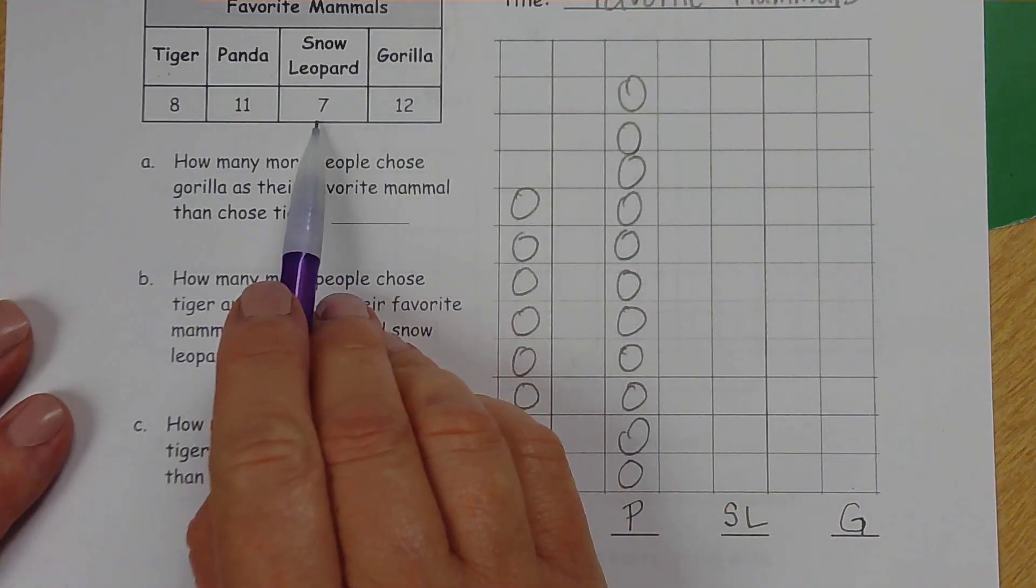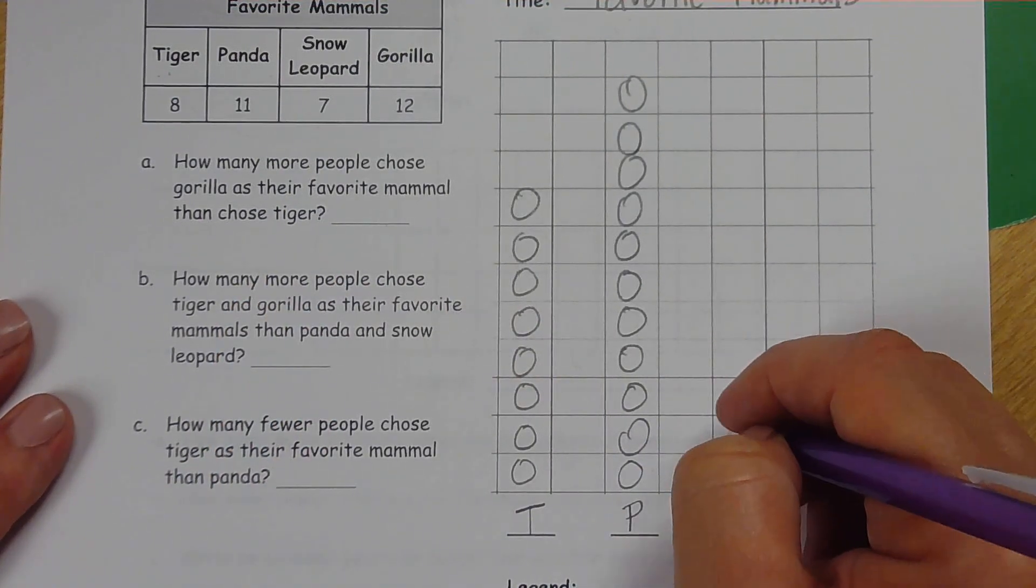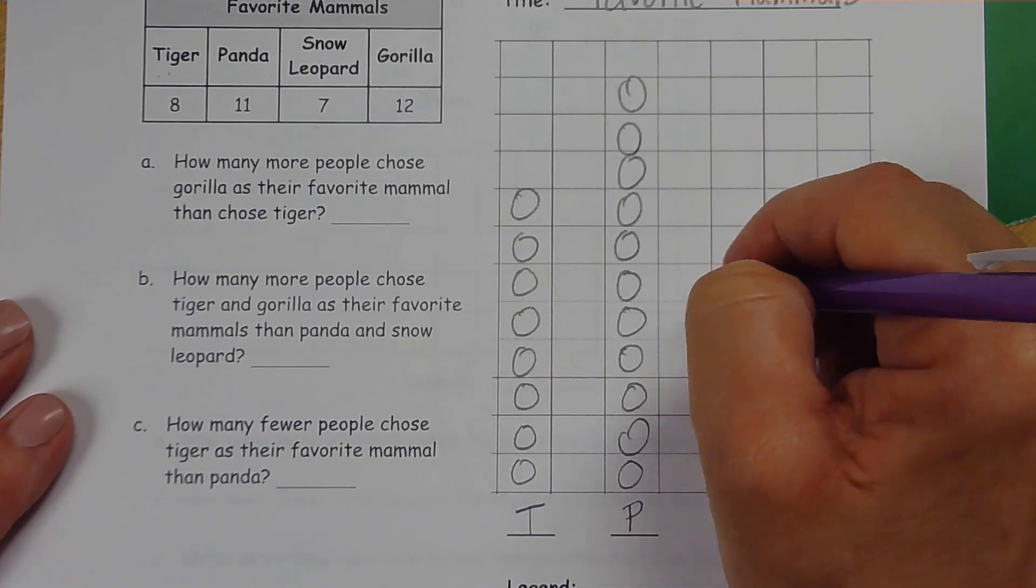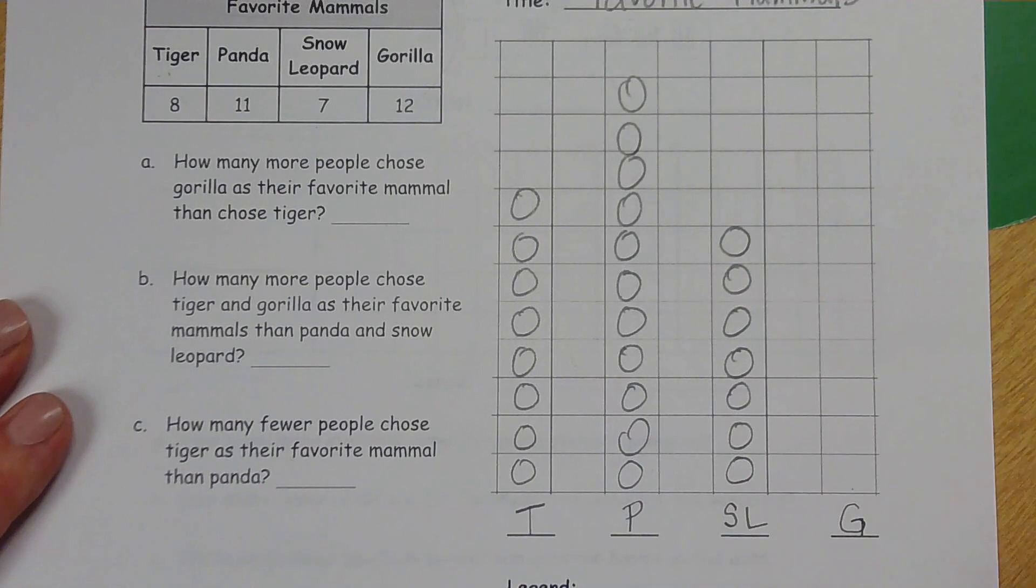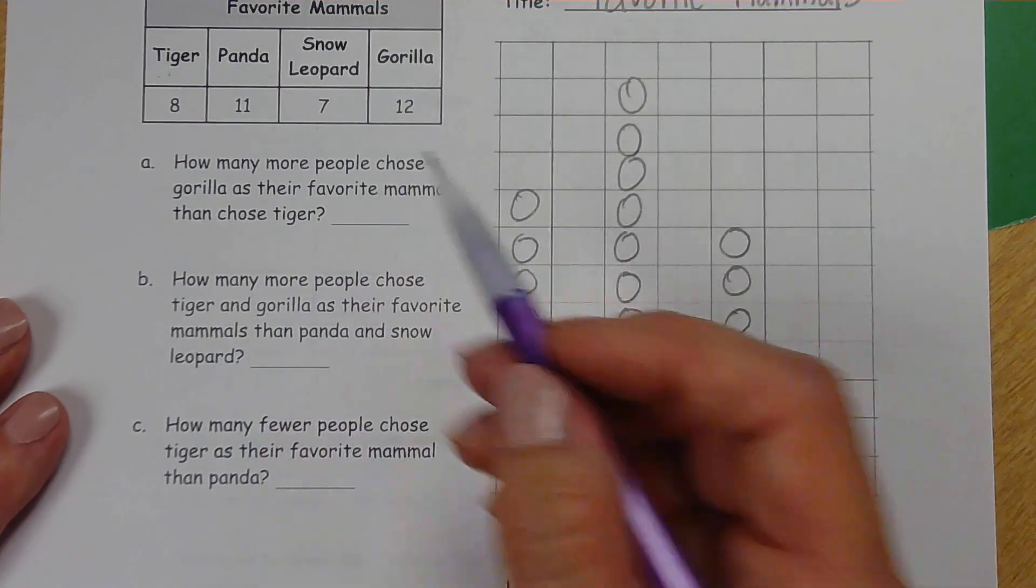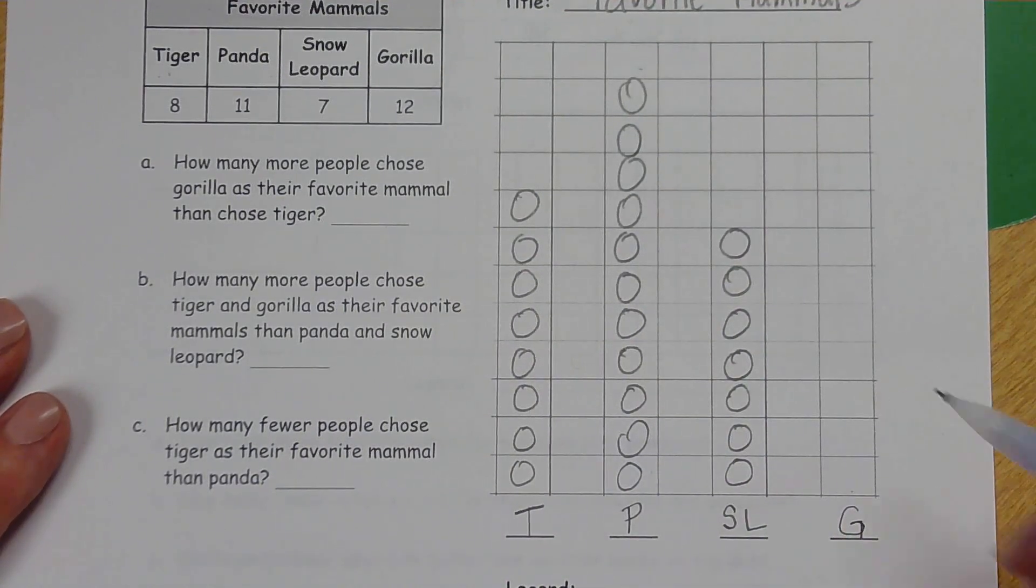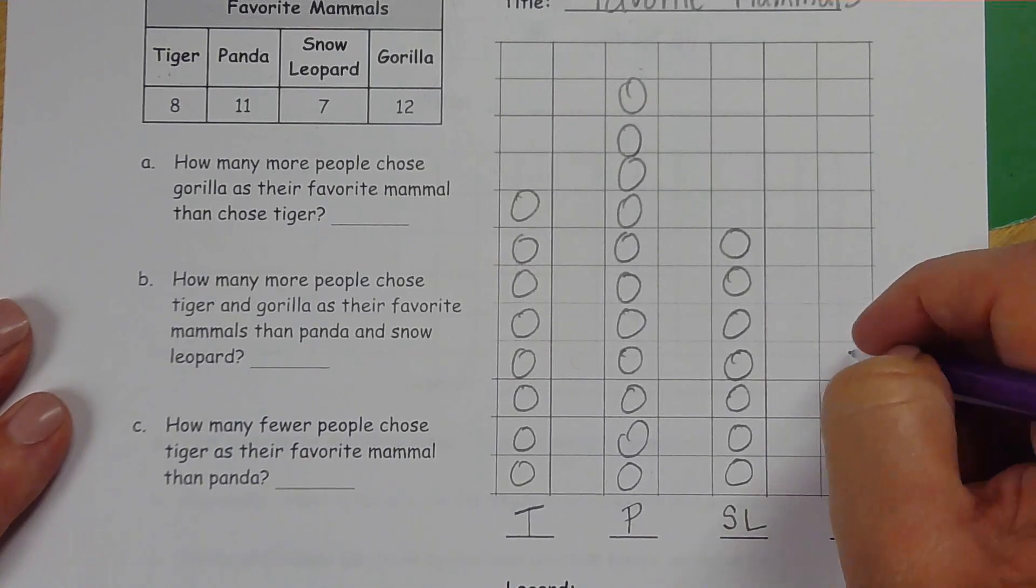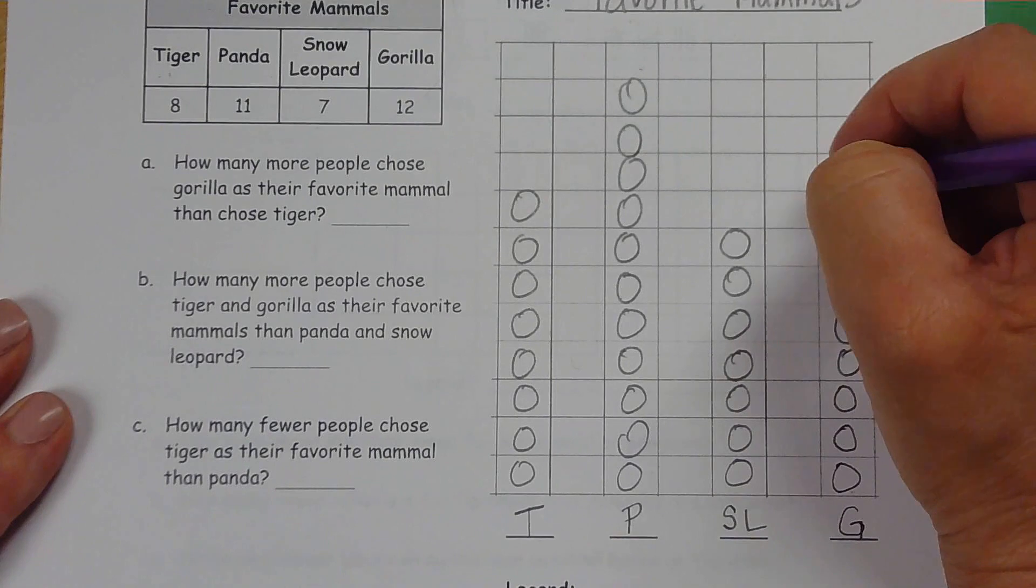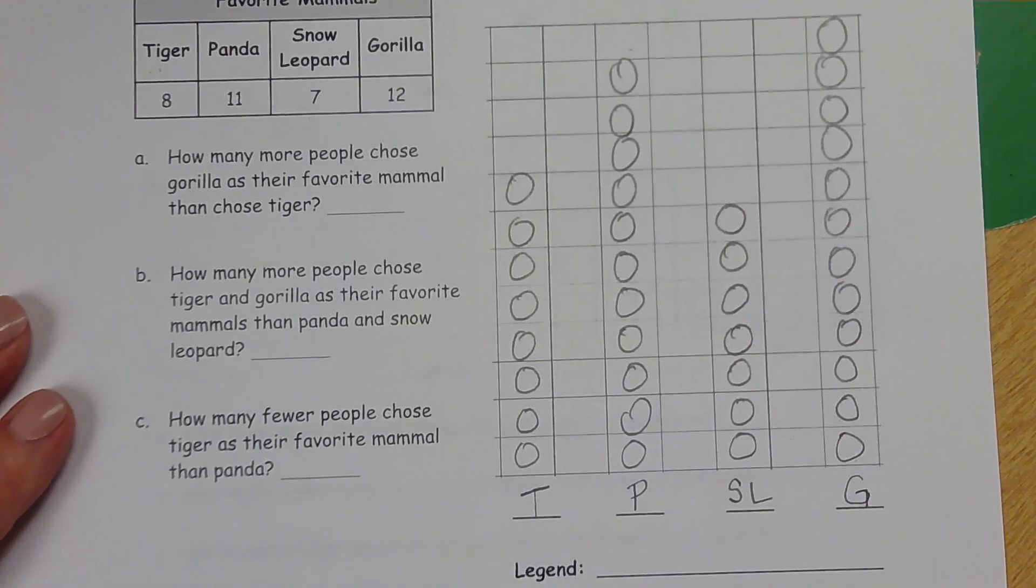Snow Leopard. We are going to do seven circles: one, two, three, four, five, six, seven. And finally, the gorilla, oh my gosh, it's got 12. This one was 11. There's just enough room for 12. We're going to put a circle in every one of those boxes. They have a lot of gorillas.